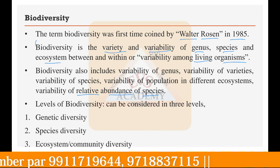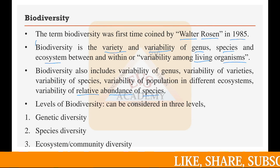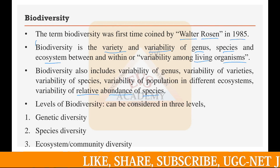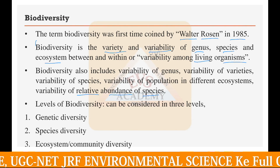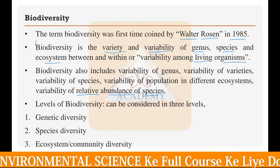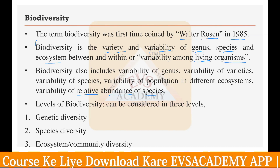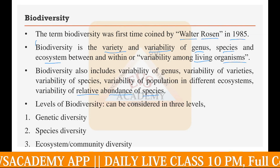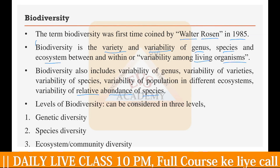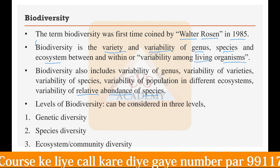Biodiversity can be known at multiple levels — basically three levels. The first level is genetic diversity: how the genetic material differs from one organism to another. For example, in the same forest you can find multiple types of frogs having different genetic material. The frog species may also be different, and inside a species there can also be very high genetic variability. That is called genetic diversity.